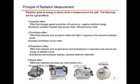The second one is the scintillation effect. When radiation hits materials such as sodium iodide, it emits fluorescence. We conduct measurements with a device called the scintillator, which measures the volume of radiation with the volume of fluorescence.